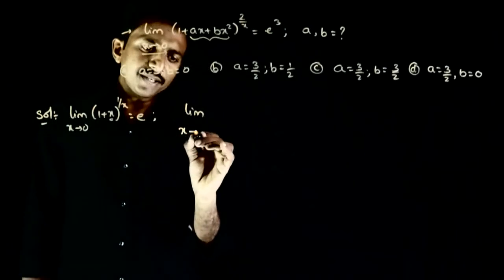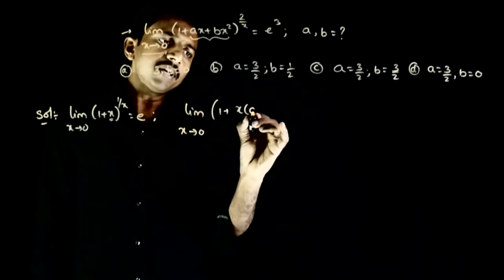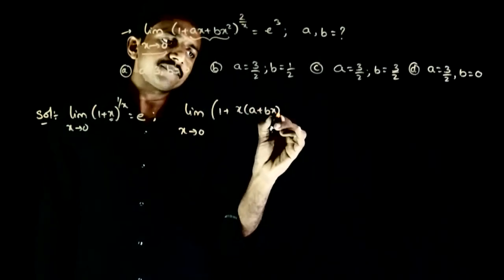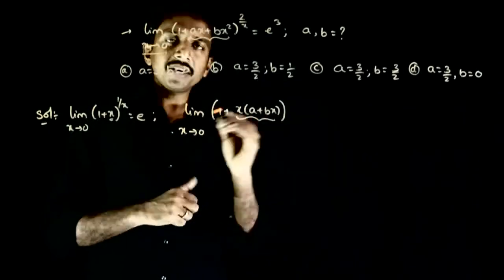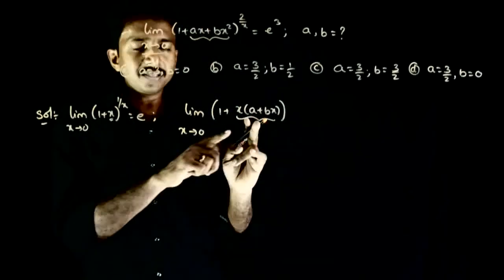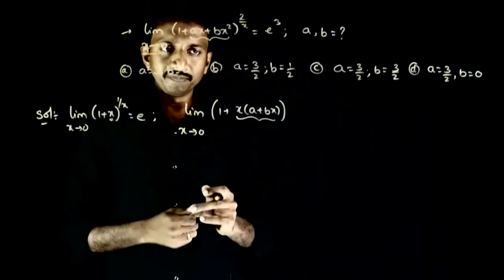So limit x tends to 0, 1 plus x into a plus bx Likta hon. So obviously you can see that Agar x 0 pe jare toh this also tends to 0. So agar isi ka exact reciprocal Mujhe upar hai toh Then the value will be equal to e.